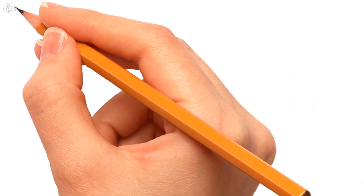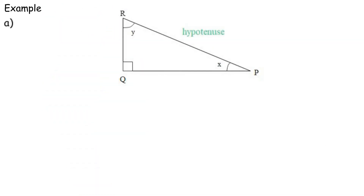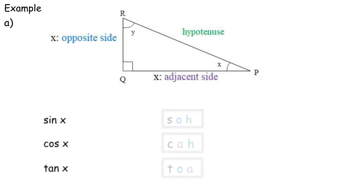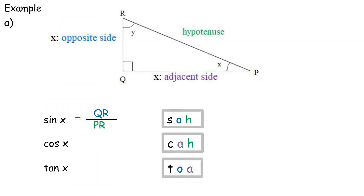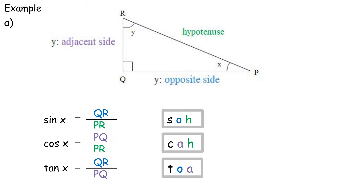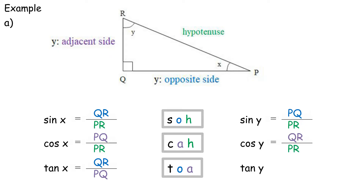Example A. Sin x equals QR over PR. Cos x equals PQ over PR. Tan x equals QR over PQ. Sin y equals PQ over PR. Cos y equals QR over PR. Tan y equals PQ over QR.